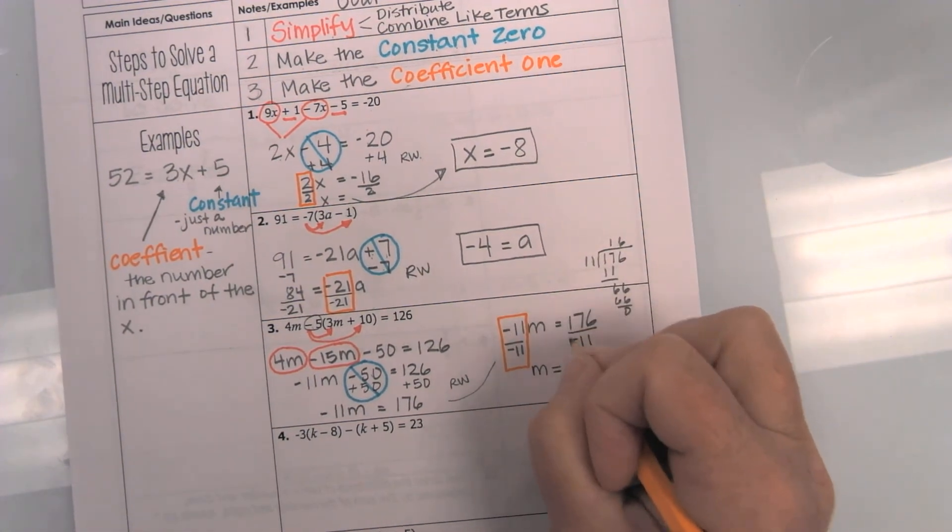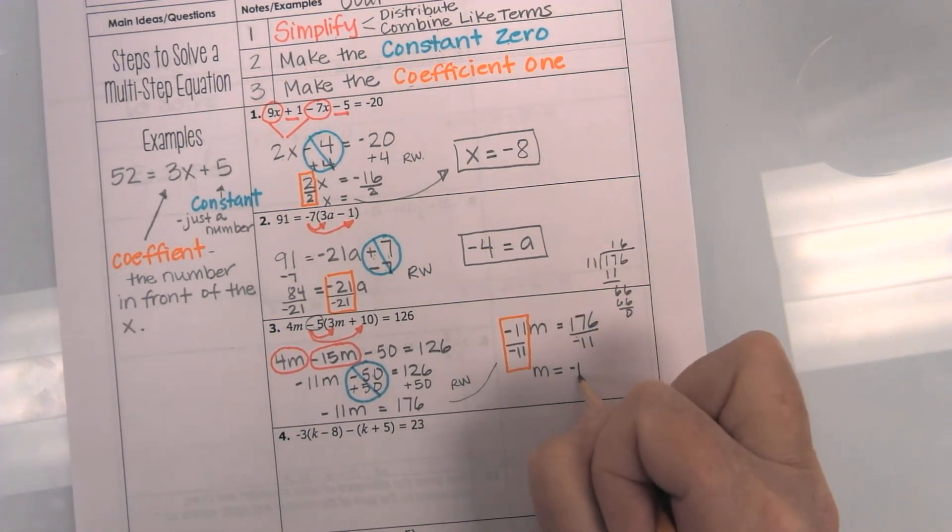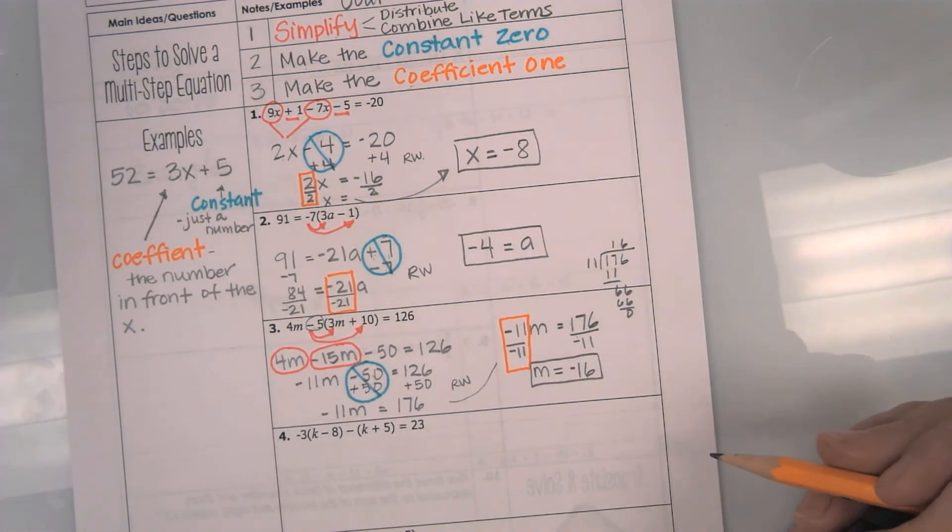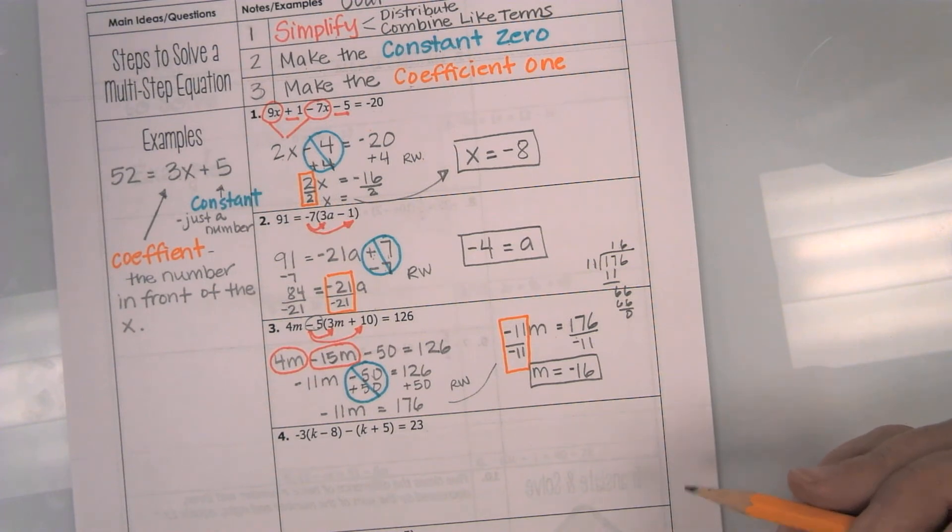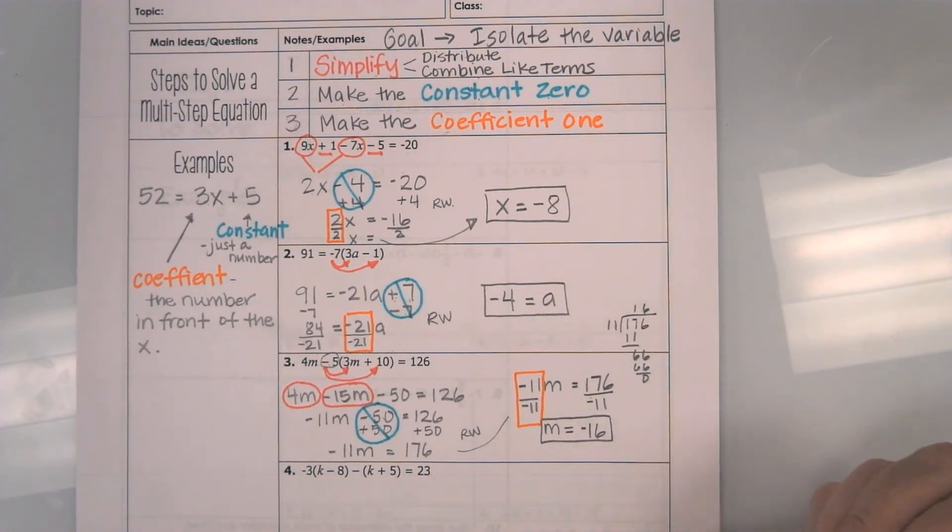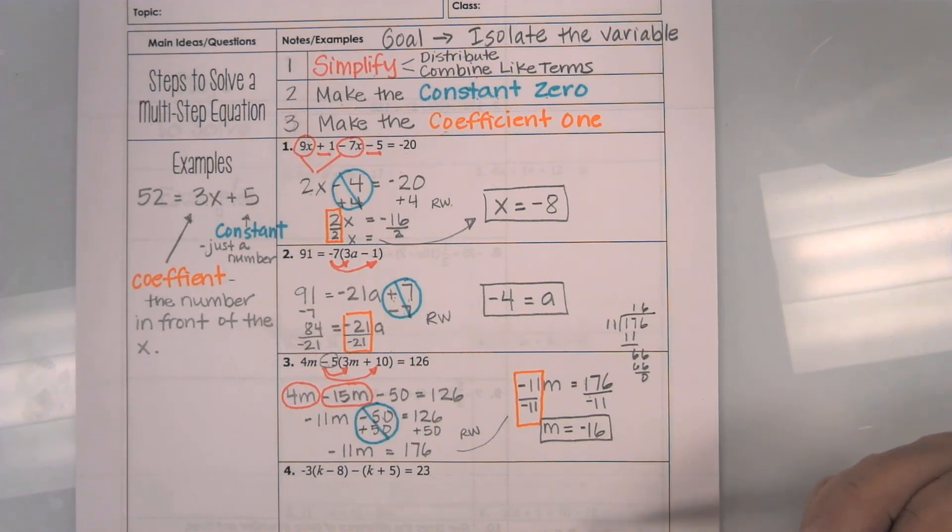And it is a negative 16, because I have a positive and a negative. Okay. There is example number 3. Okay. At this point, go ahead and pause the video and start working on your own. Remember, you need to do at least 5 on your own. And then you can move into delta math or finish up this worksheet.